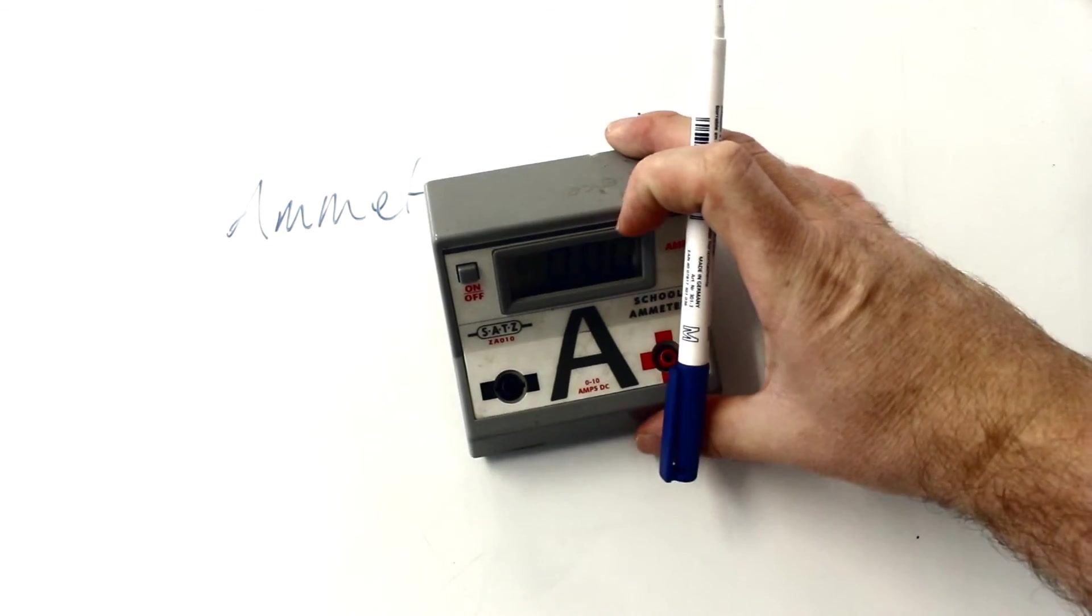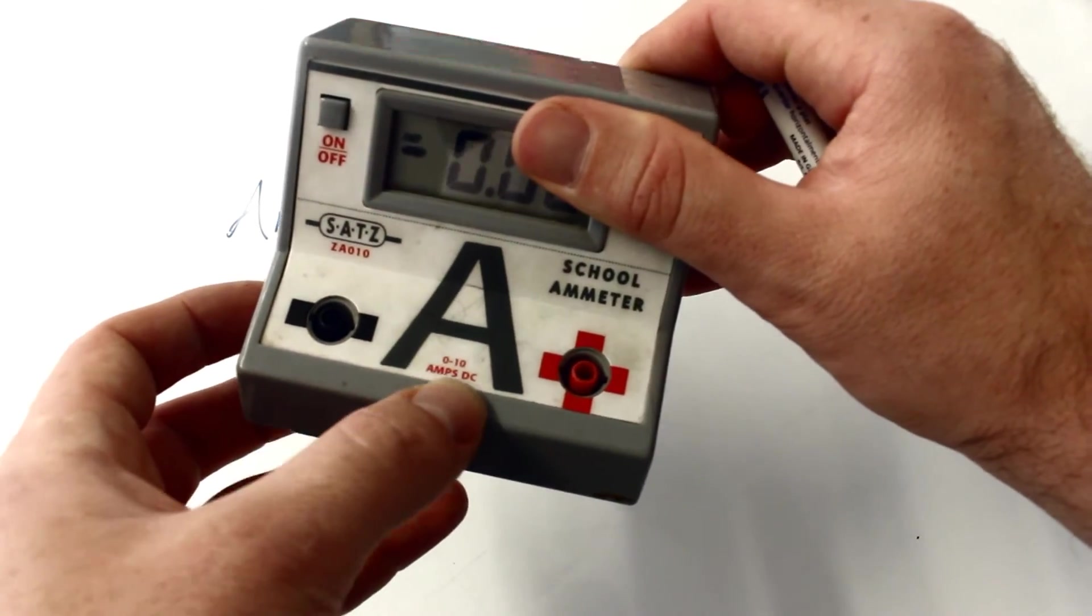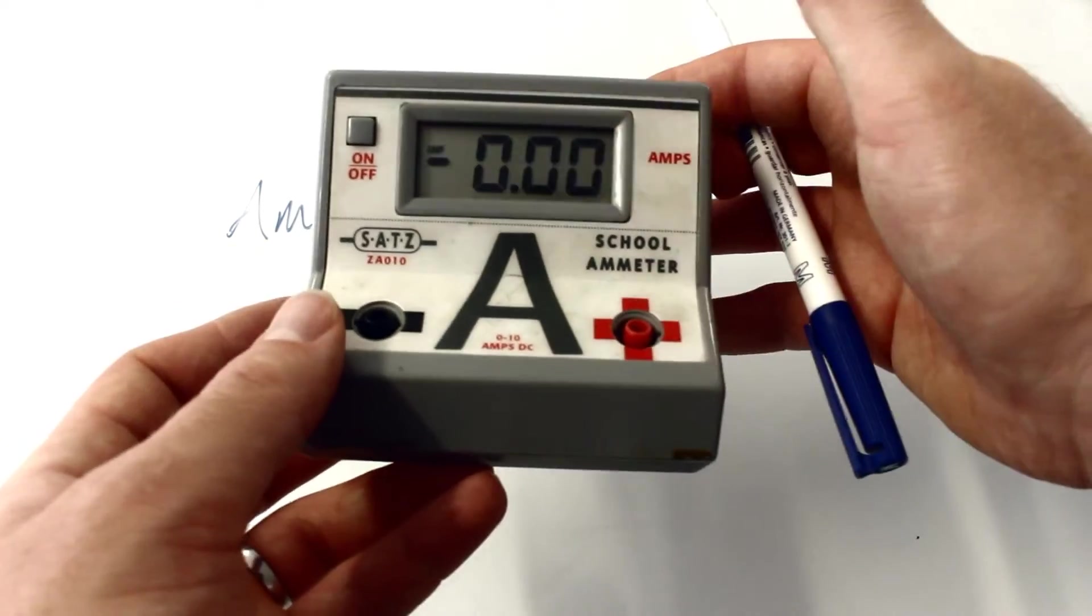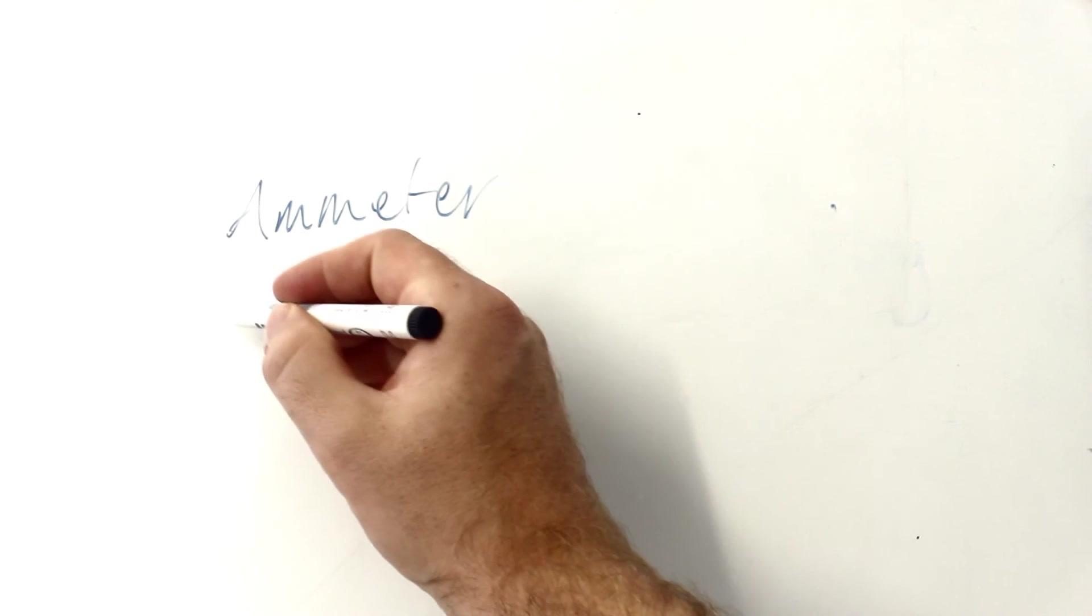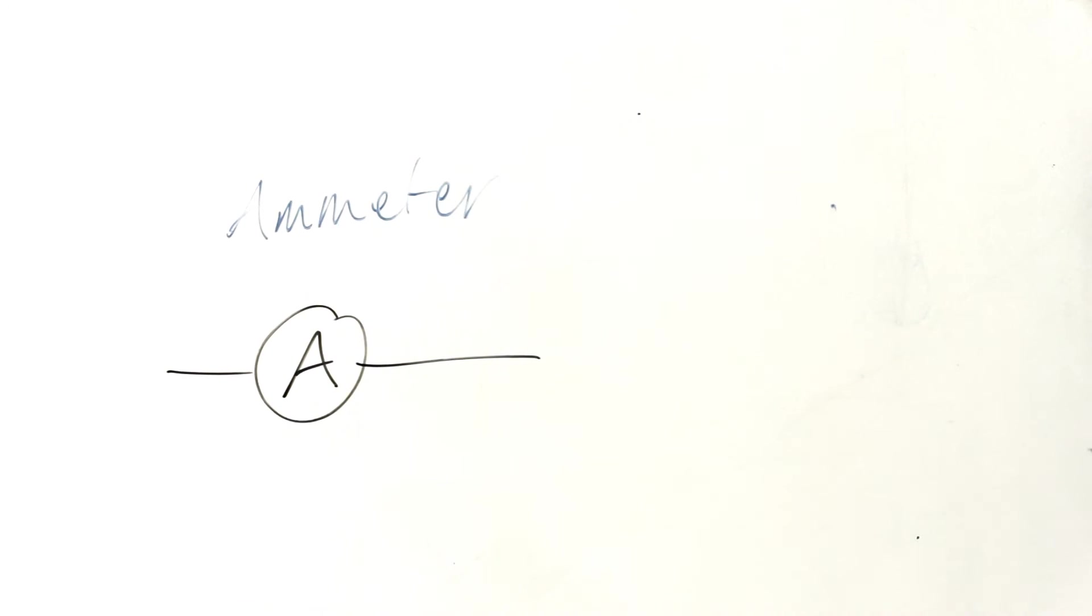So that's an ammeter. And you can clearly tell them apart because of the big A on these standard school ammeters. That's a 0 to 10 amp one. So again, it can go up as high as 9.99 amps or as low as minus 9.99. It's got a symbol like that.